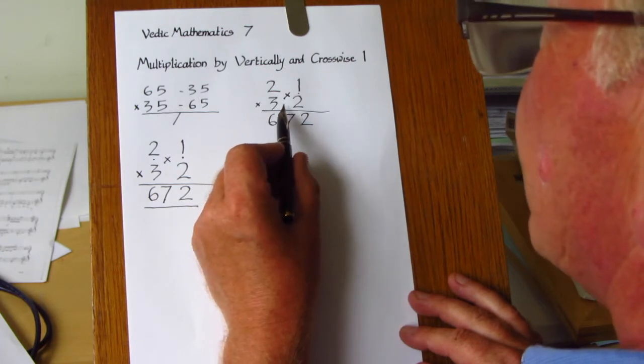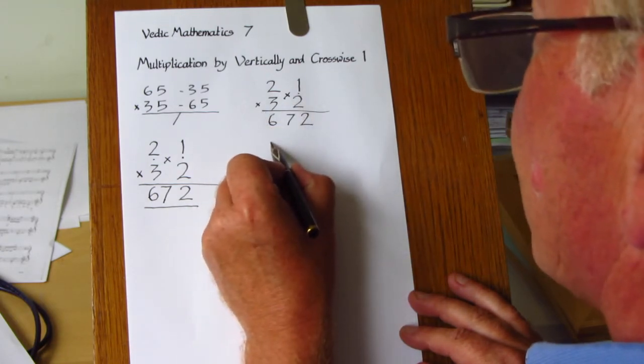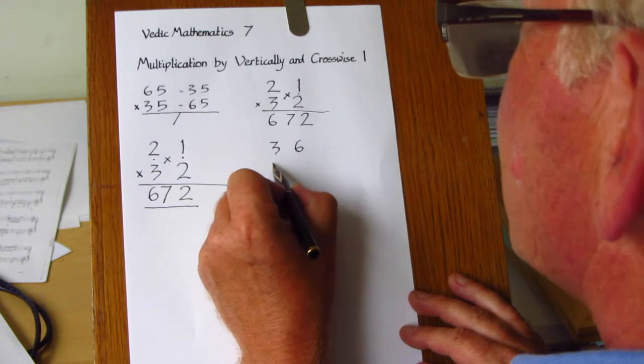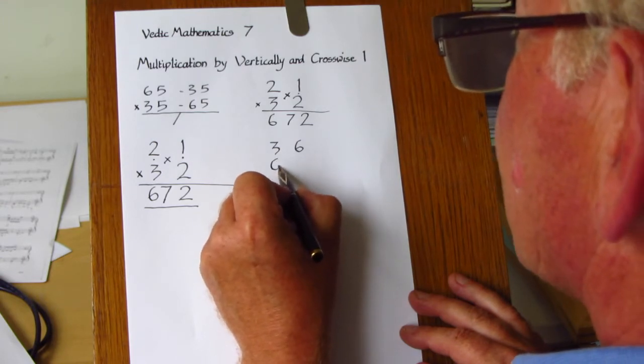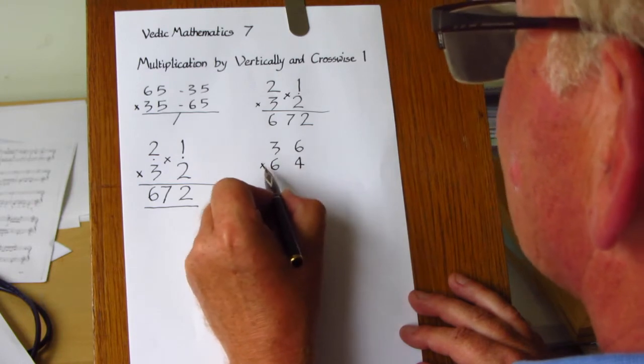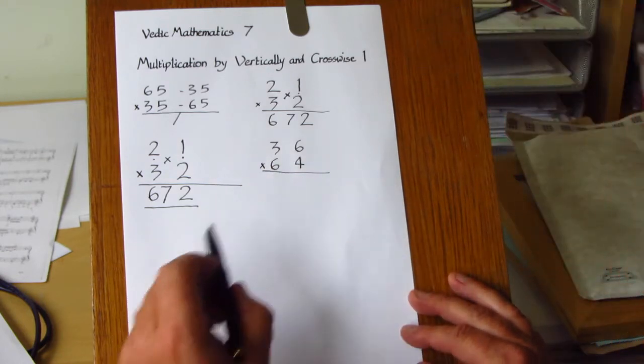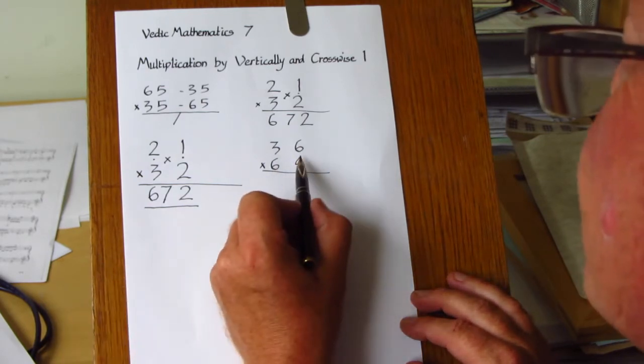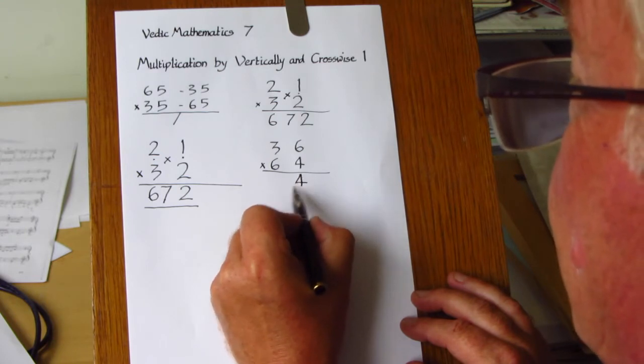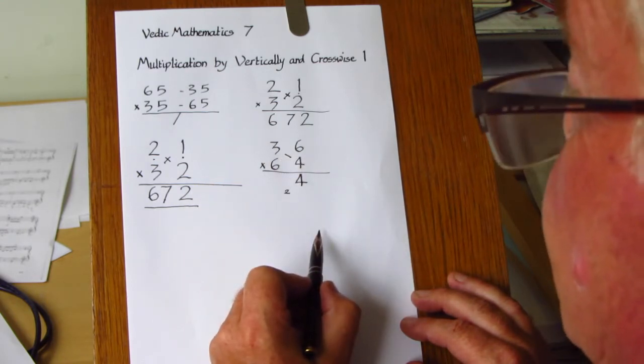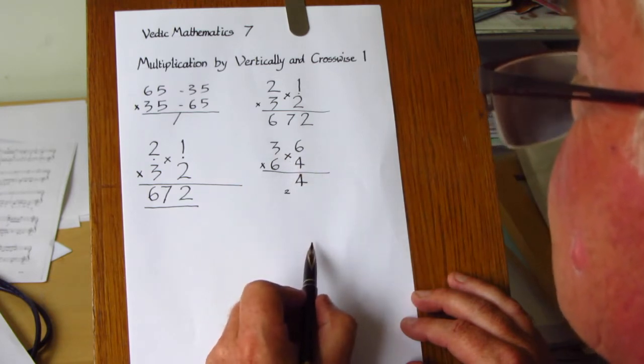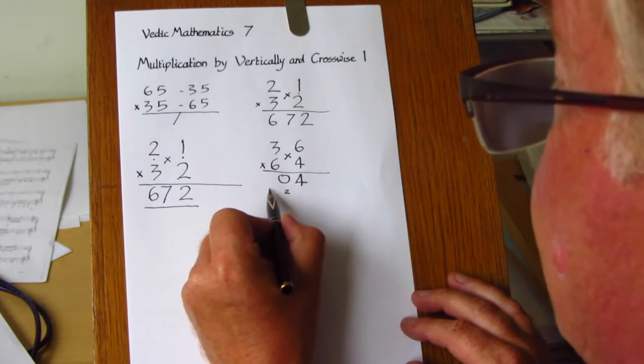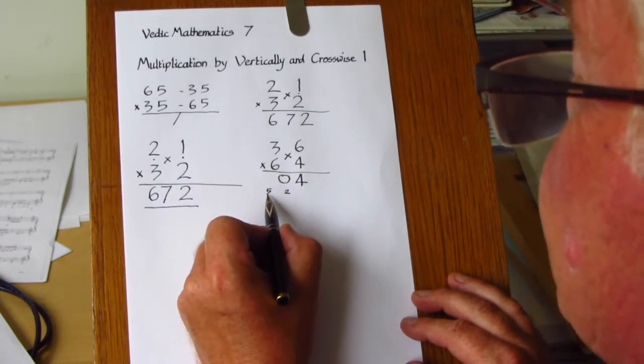And the only drawback with this is that if we have a larger product or a product with larger digits in, we may well land up with some carry digits which we then have to use a second line for. So in this example we have 36 times 64. Working from the right, 6 4s are 24. And then we have 3 4s is 12 and 6 6s is 36. 36 add 12 is 48, add this carry 2 makes 50. And then 3 6s are 18, add the 5 is 23.